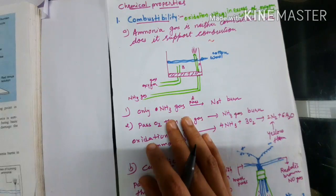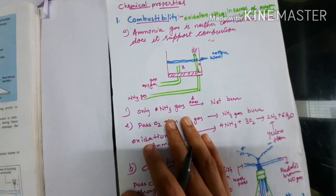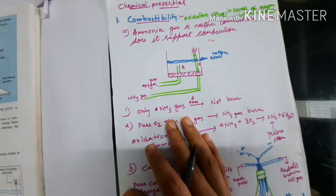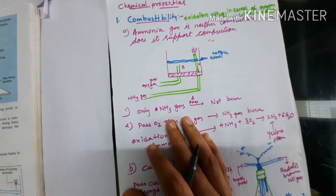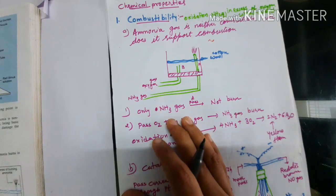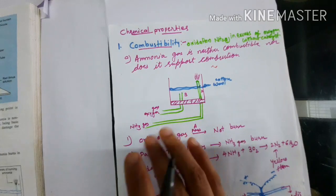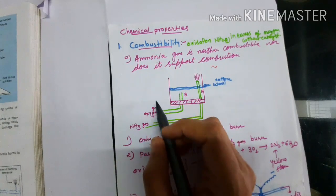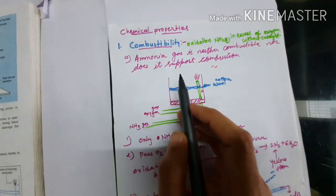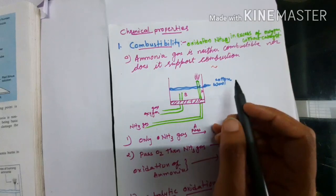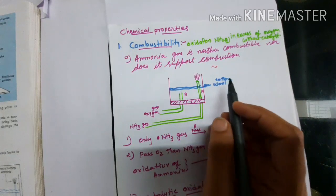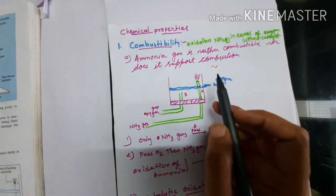The first one is combustibility. We can also call it oxidation, because combustion happens in the presence of oxygen only, so we can say it is an oxidation reaction. The first and most important point is that ammonia gas neither combusts nor does it support combustion.